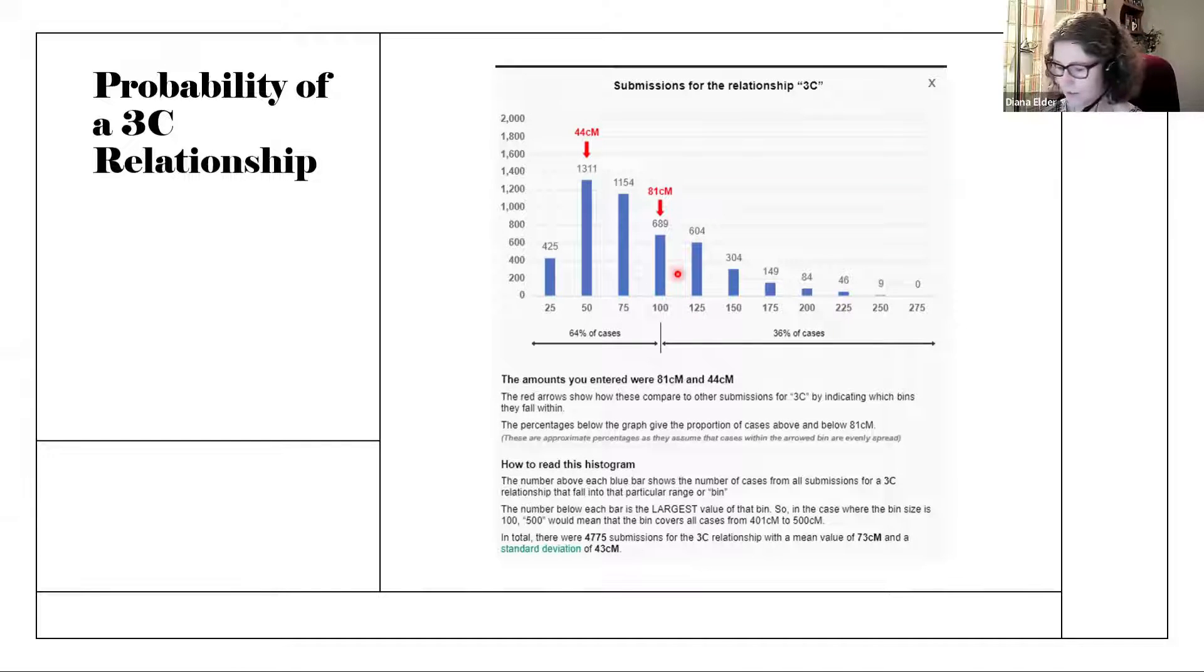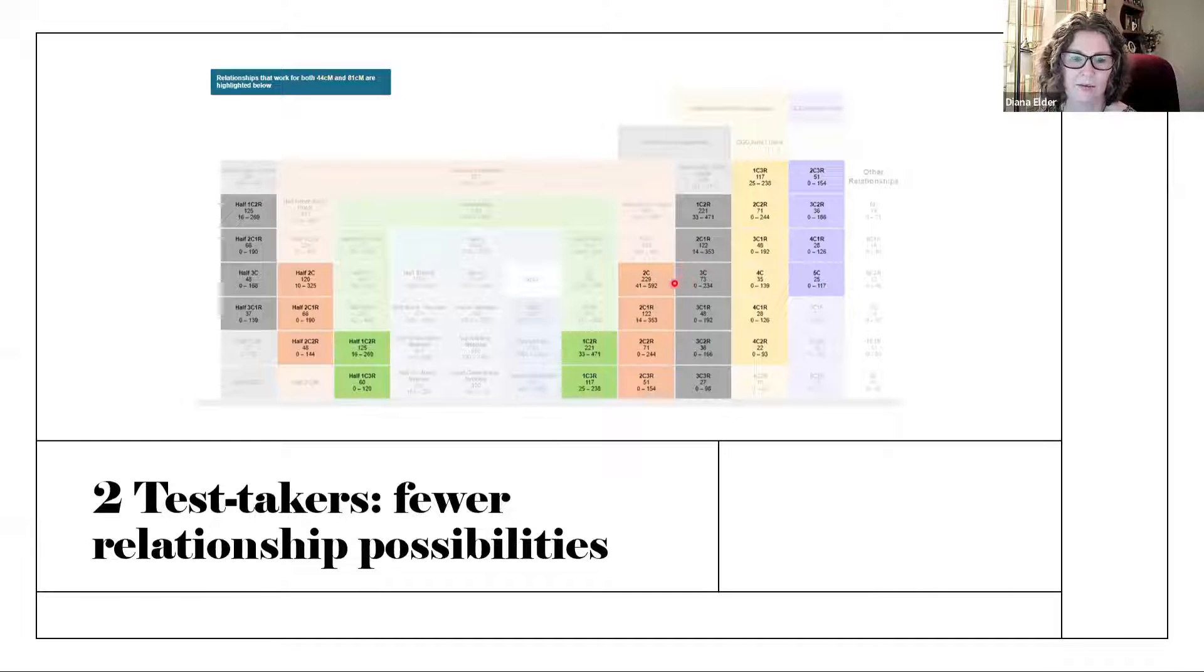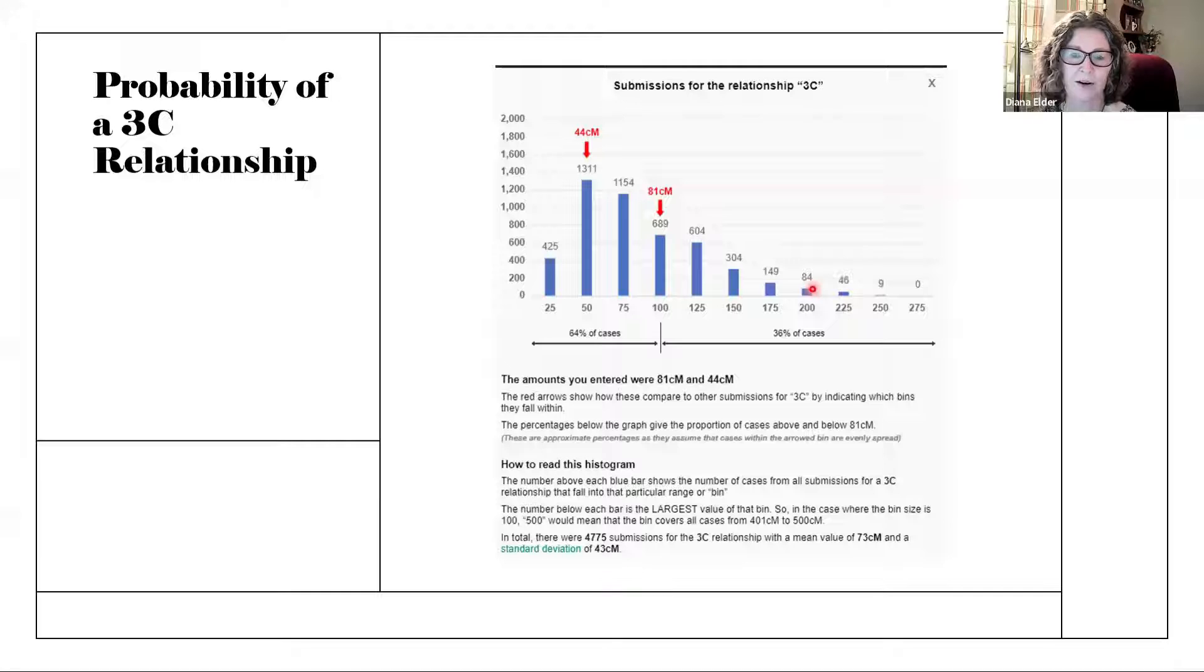When I clicked on some of those other relationships, say for instance, one of these over here or maybe one of these out here, what I saw were the red arrows clear out here on the edges or clear over here on the edges, meaning that it was not statistically as possible as this third cousin relationship.